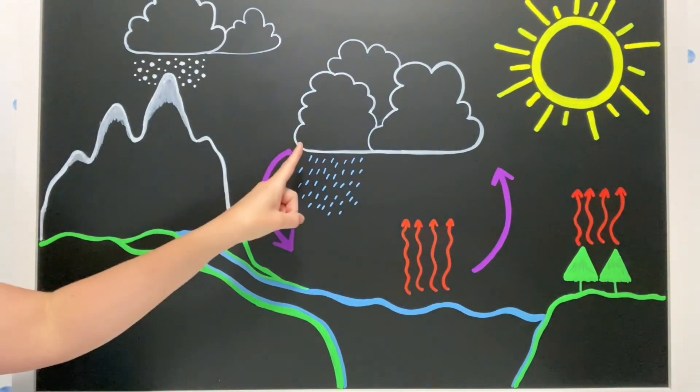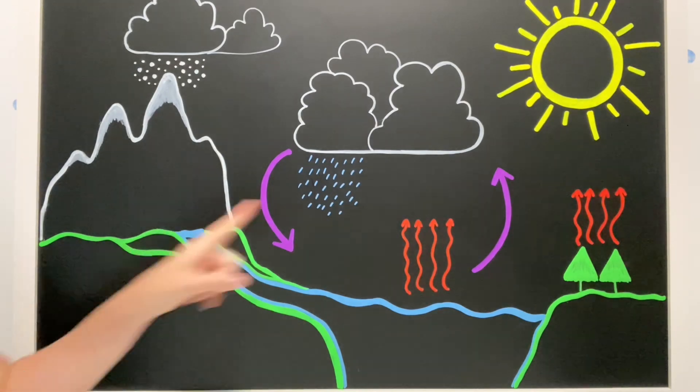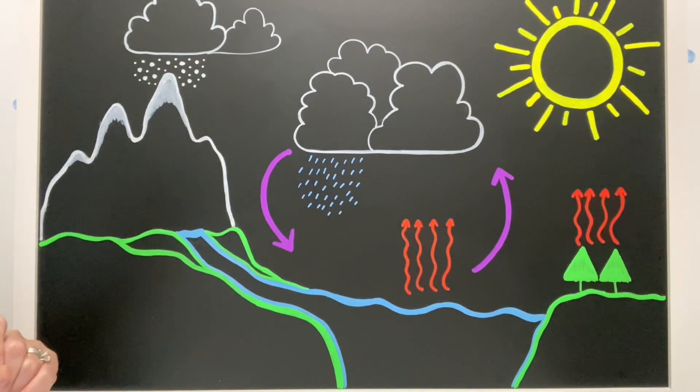And then once the clouds get so big and so heavy, what do you think happens? We get rain or snow. That's our precipitation.